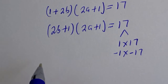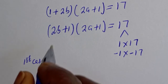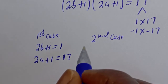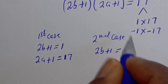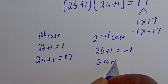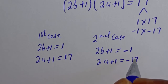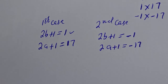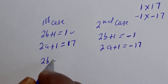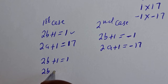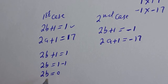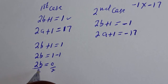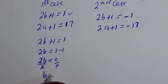There are 2 cases here. The first case is: 2b plus 1 is equal to 1, and 2a plus 1 is equal to 17. From 2b plus 1 equals 1: 2b is equal to 1 minus 1, so 2b equals 0. Dividing both sides by 2, b is equal to 0.